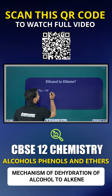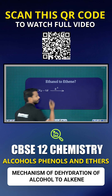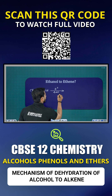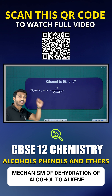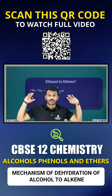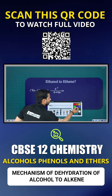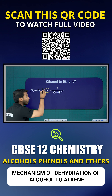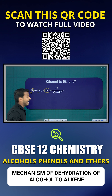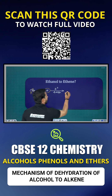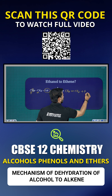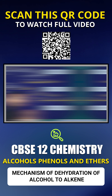Ethanol, when heated with an acid at 443 Kelvin, undergoes dehydration. What do we mean by dehydration? Removal of water. We take the OH from the alpha carbon and one hydrogen from the beta carbon, and make a double bond between alpha and beta. The product is CH2=CH2 plus H2O — that's ethene.